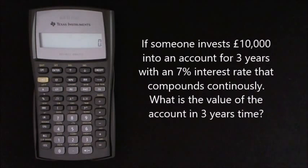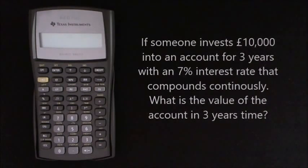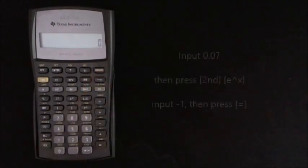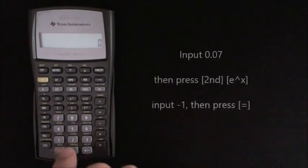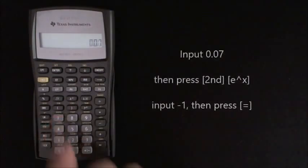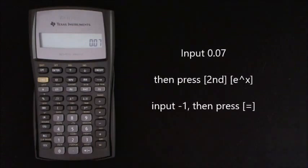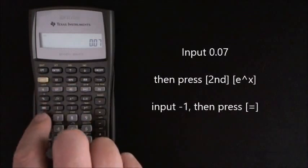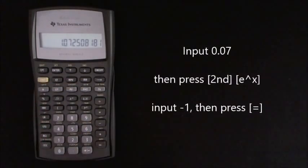The number E button will convert the 7% simple interest rate to the real continuously compounding rate. So we press 0.07, then press the second, and E to the power of X, which is the LN key.